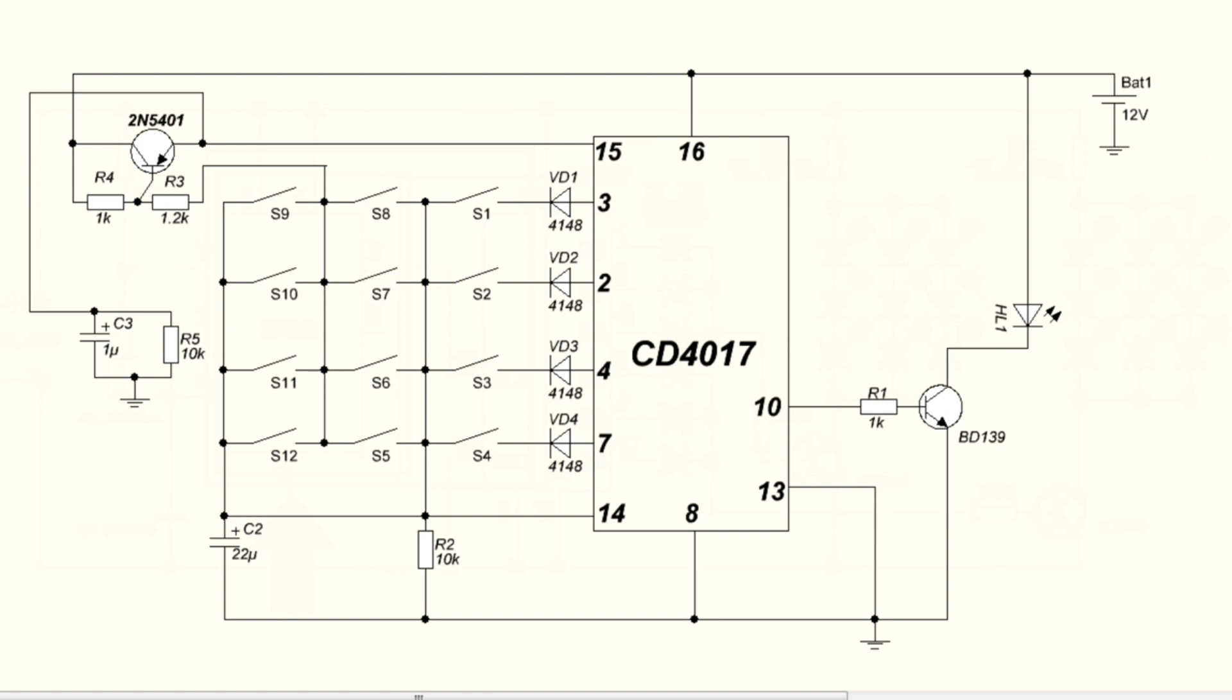When power is applied on pin 3 is present a logical one. With pressing S1 button, logic 1 is supplied to the clock input 14 of counter and it begins work. In other words, begins pulse reading. So logic 1 appears on the second pin.